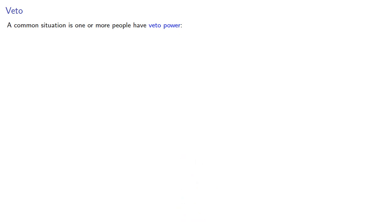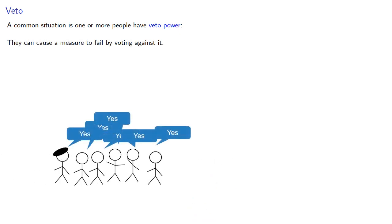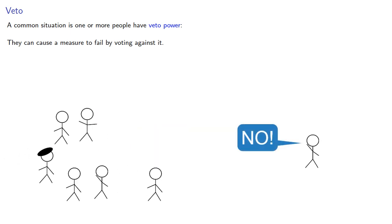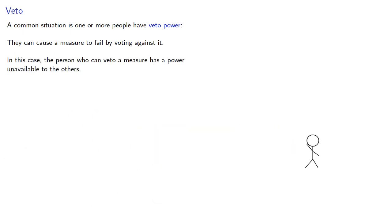A common situation is one or more people have veto power. They can cause a measure to fail by voting against it. In this case, the person who can veto a measure has power unavailable to the others.